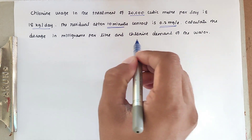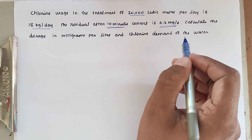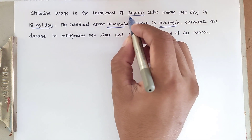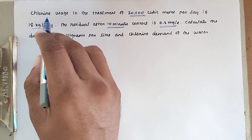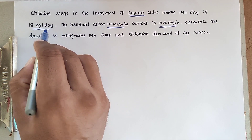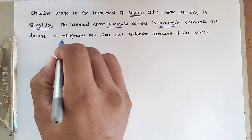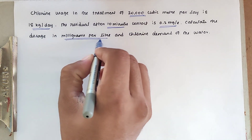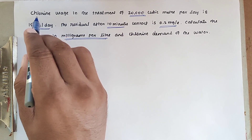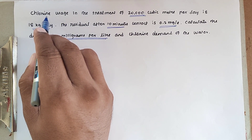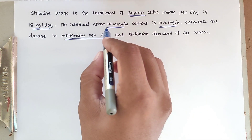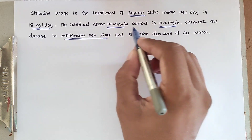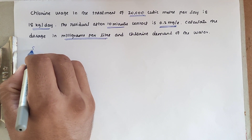So in this problem, the treatment is 20,000 cubic meters per day and the chlorine required is 18 kg per day. We have to find out the chlorine dosage in milligram per liter — that is, how much quantity of chlorine per liter is required for the treatment. Also, the residual is 0.2 milligram per liter after 10 minutes of contact.